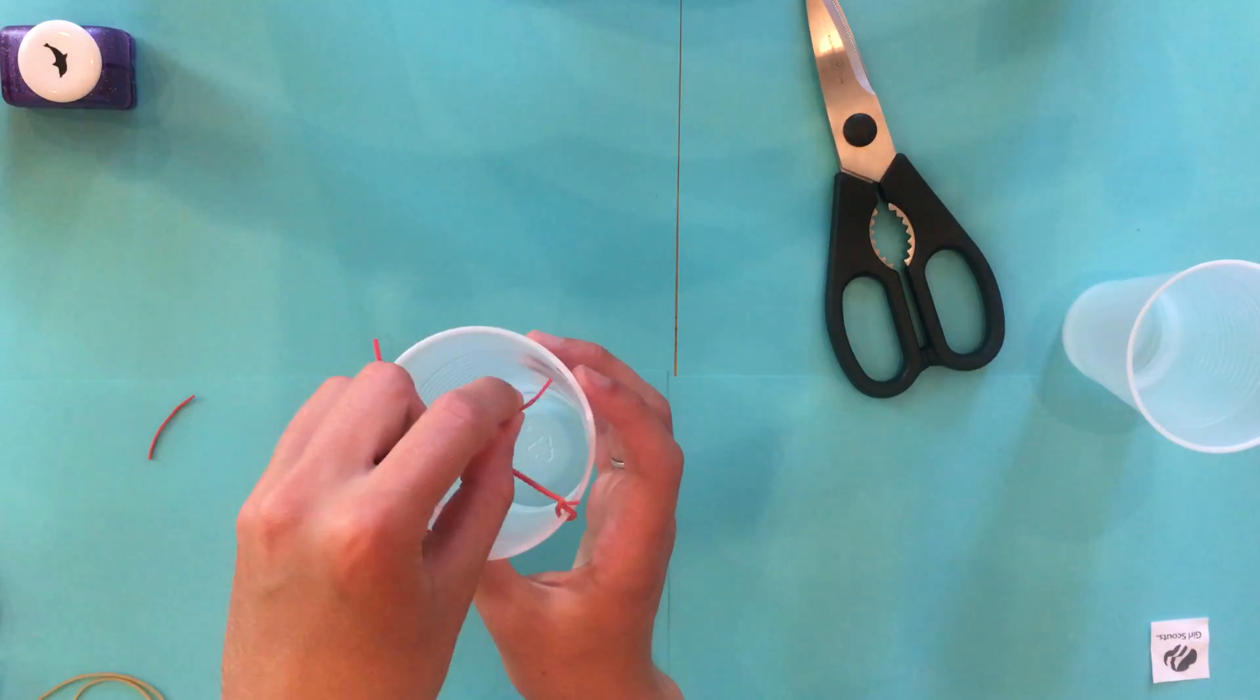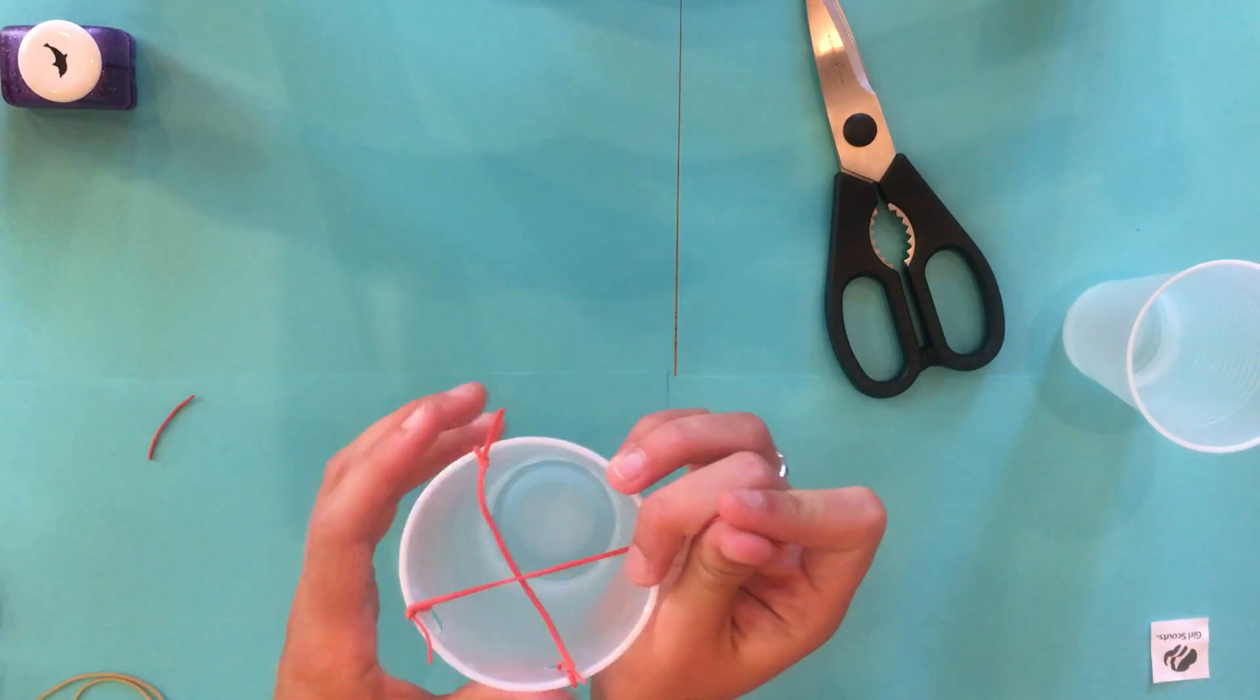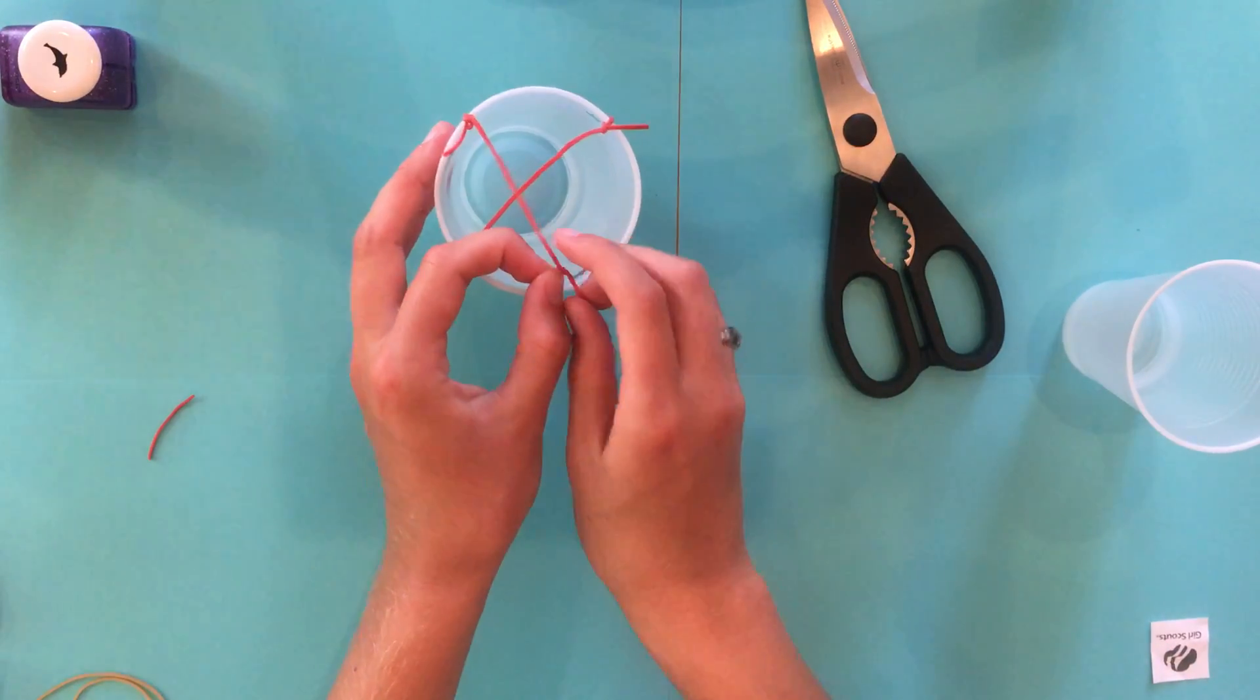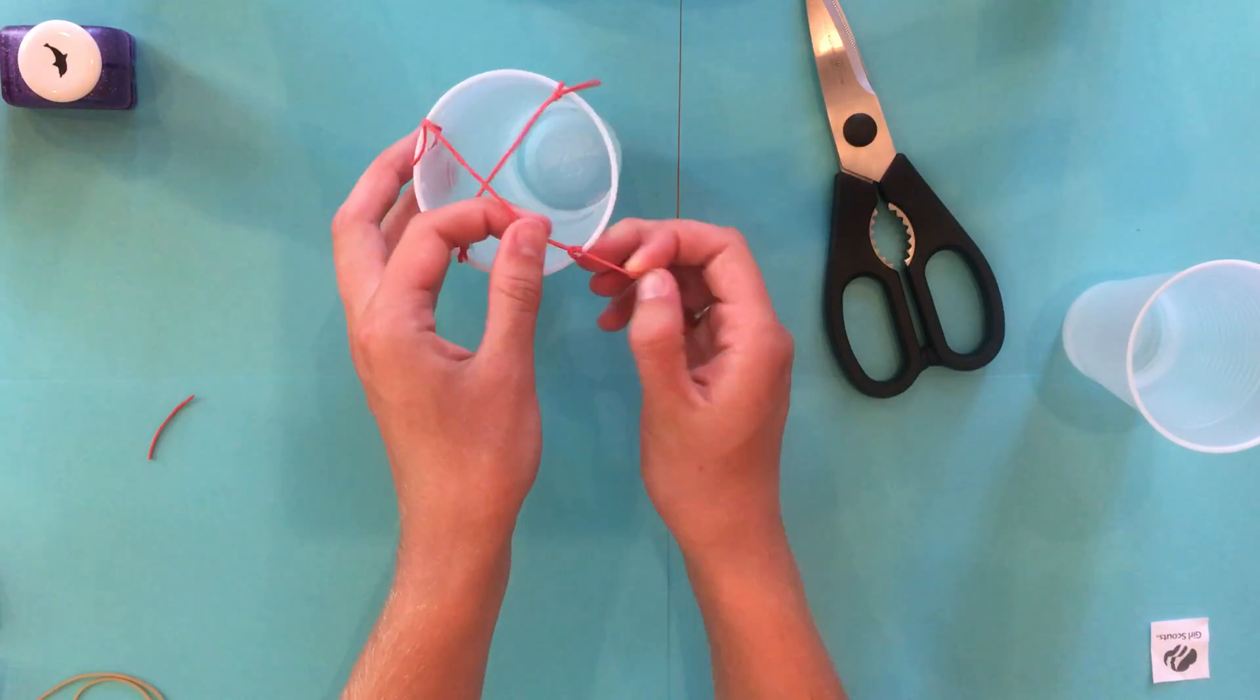Now I pull it through the last hole. Make sure it's not too loose so it's a little bit tighter. I always make one of them tighter and one of them looser, in case one of them breaks. It still works because you still have one of the rubber bands.